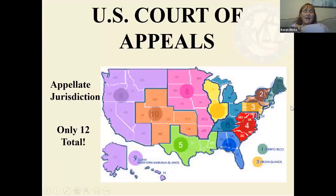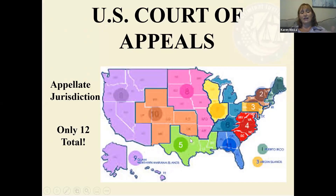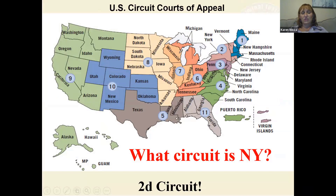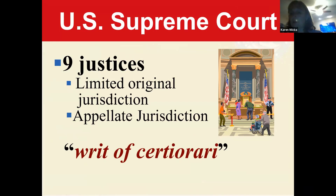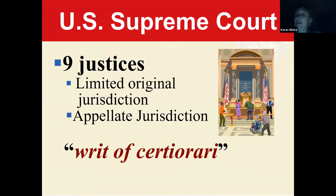If you don't like what happened at the district court, you appeal to the U.S. Court of Appeals, which has appellate jurisdiction. Because there are fewer appeals than original trials, we only need 12 circuits. New York is in the Second Circuit. Then above that is the Supreme Court — the highest court in our system.